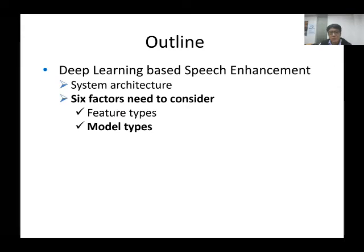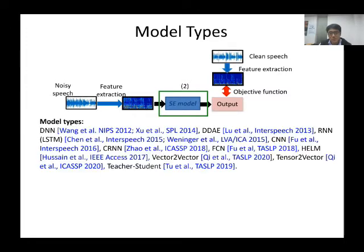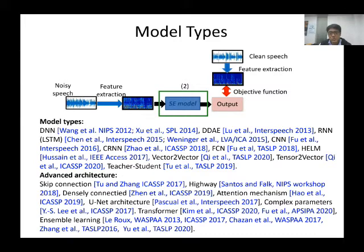Many different types of models have been proposed for speech enhancement systems, such as DNN, DDAE, RNN, LSTM, CNN, CRN, FCN, and others. To further improve performance, advanced techniques such as skip connection, highway-density connected networks, attention mechanism, and unit architecture have been proposed. More recently, several ensemble learning methods have been proposed for speech enhancement. I am going to introduce one ensemble learning method.